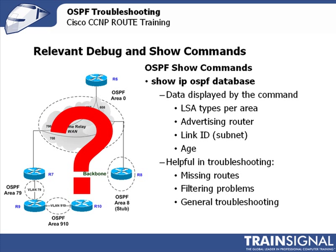The show IP OSPF database command will show you the entire contents of the link state database. It'll show the LSA types per area — 1, 2, 3, 4, and 5, for example — the router that's advertising that particular network, the link ID specifically the subnet, and the age that's in the routing table. It's helpful in troubleshooting missing routes, filtering problems, and general troubleshooting.